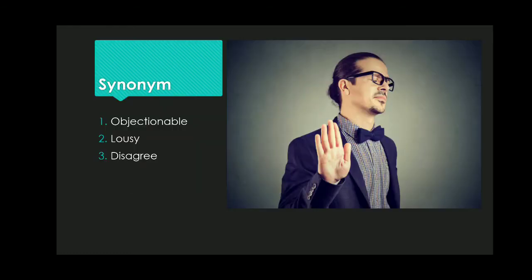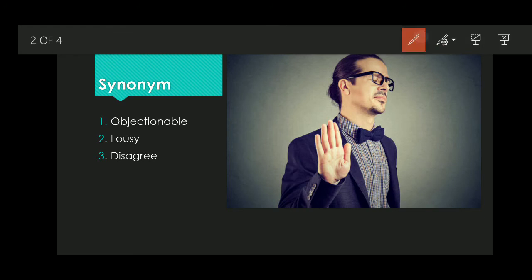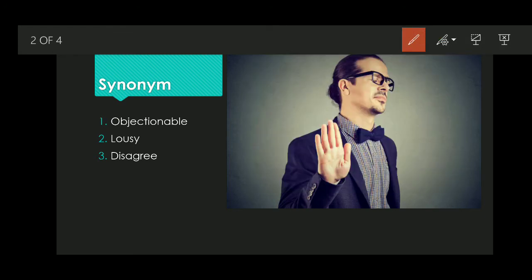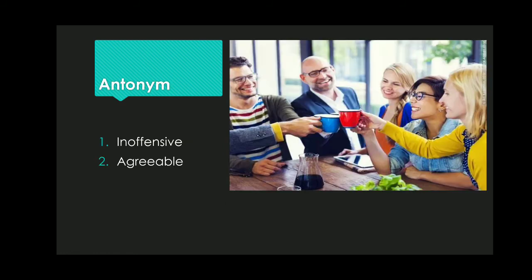Hello friends, today we are going to learn a word — its synonyms and antonyms. The word is 'obnoxious.' The synonyms of obnoxious are objectionable, lousy, and disagreeable. Here we can see the picture, where the person is objectionable or disagreeable.